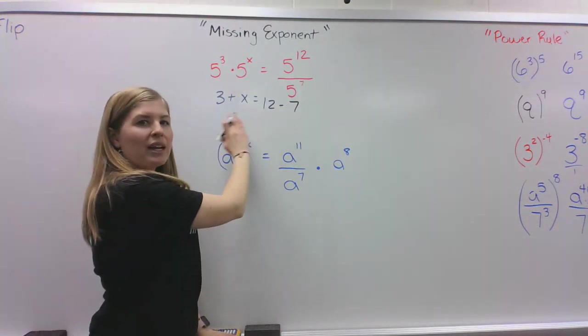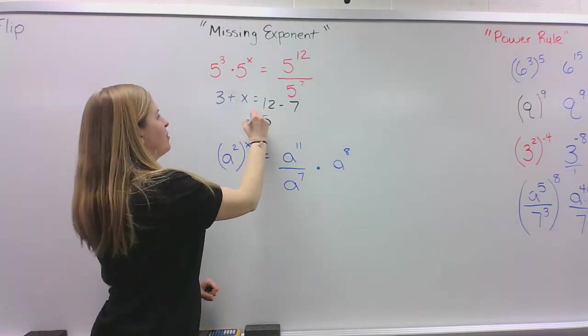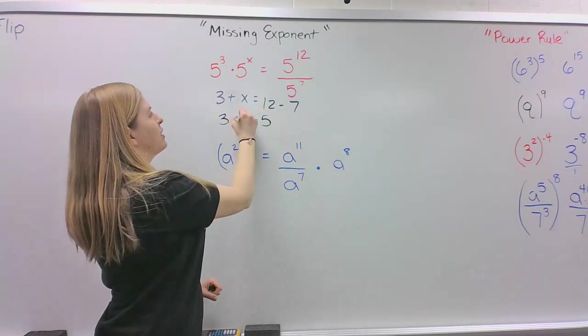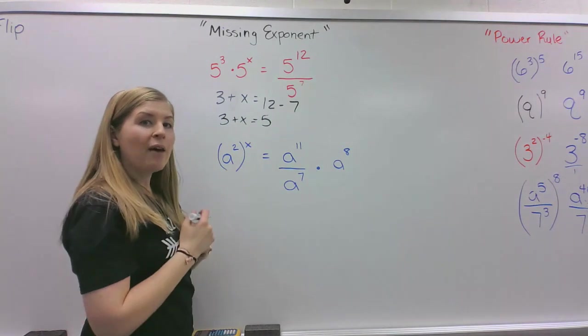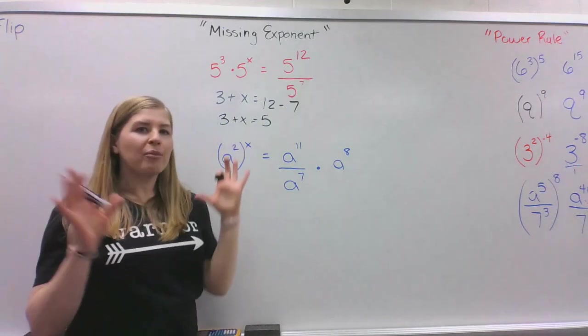Well, let's simplify. Combining like terms, what is 12 minus 7? 5. So now we have 3 plus some number equals 5. And who remembers, how are we going to get x by itself? We want to figure out what the number equals.